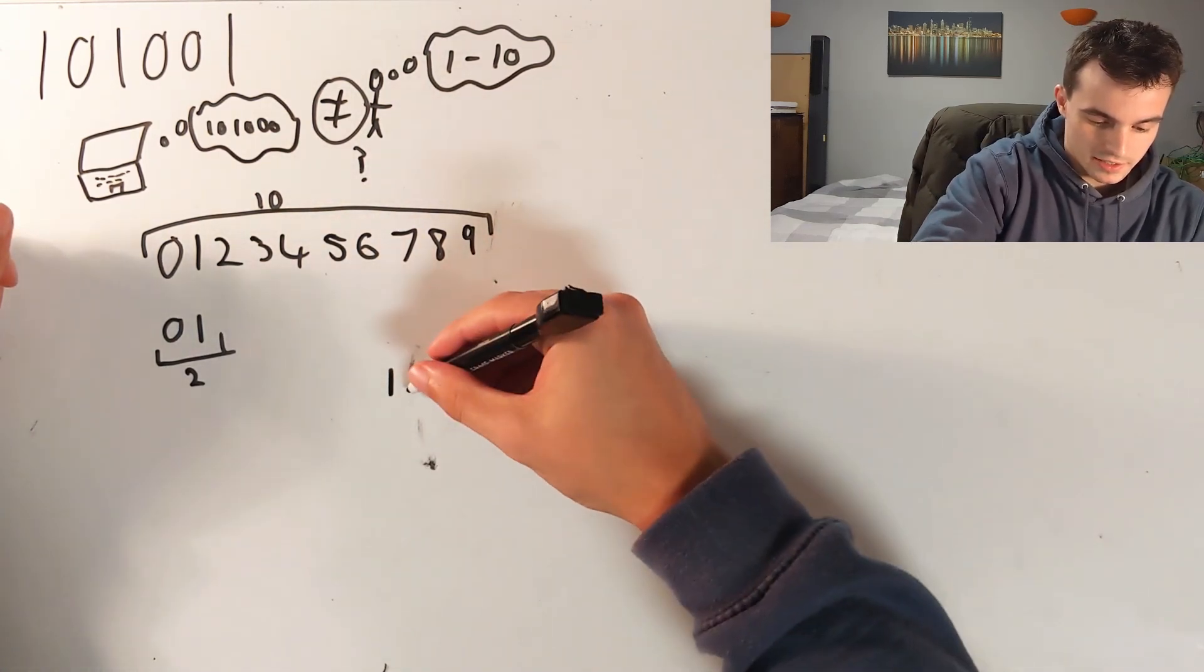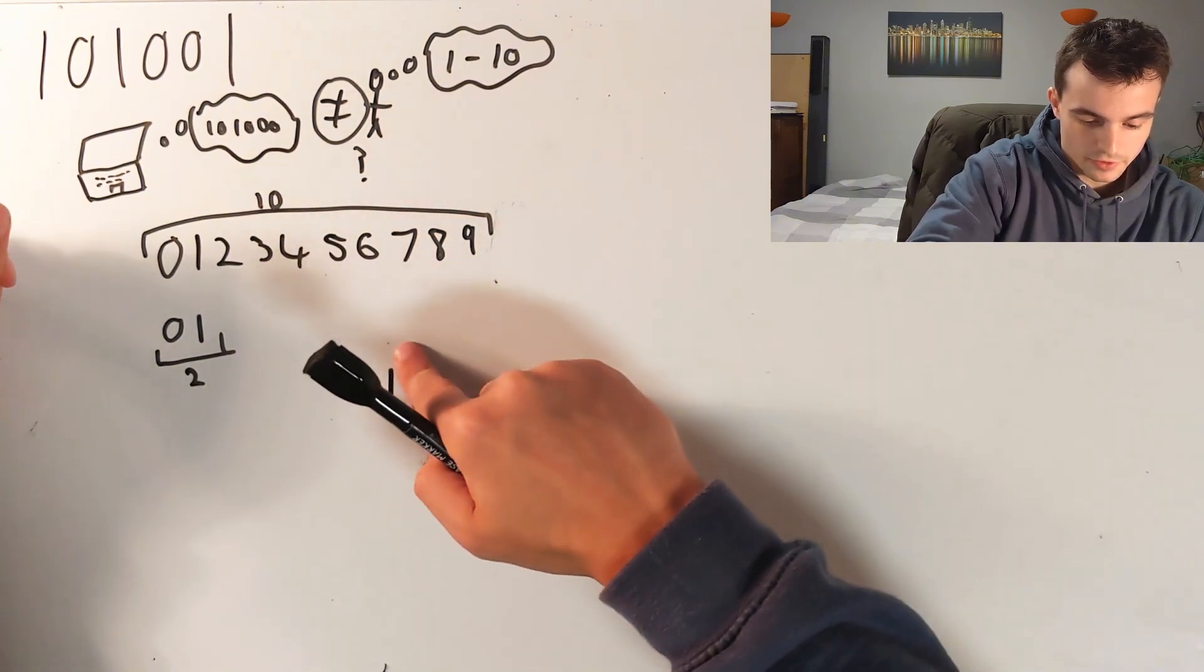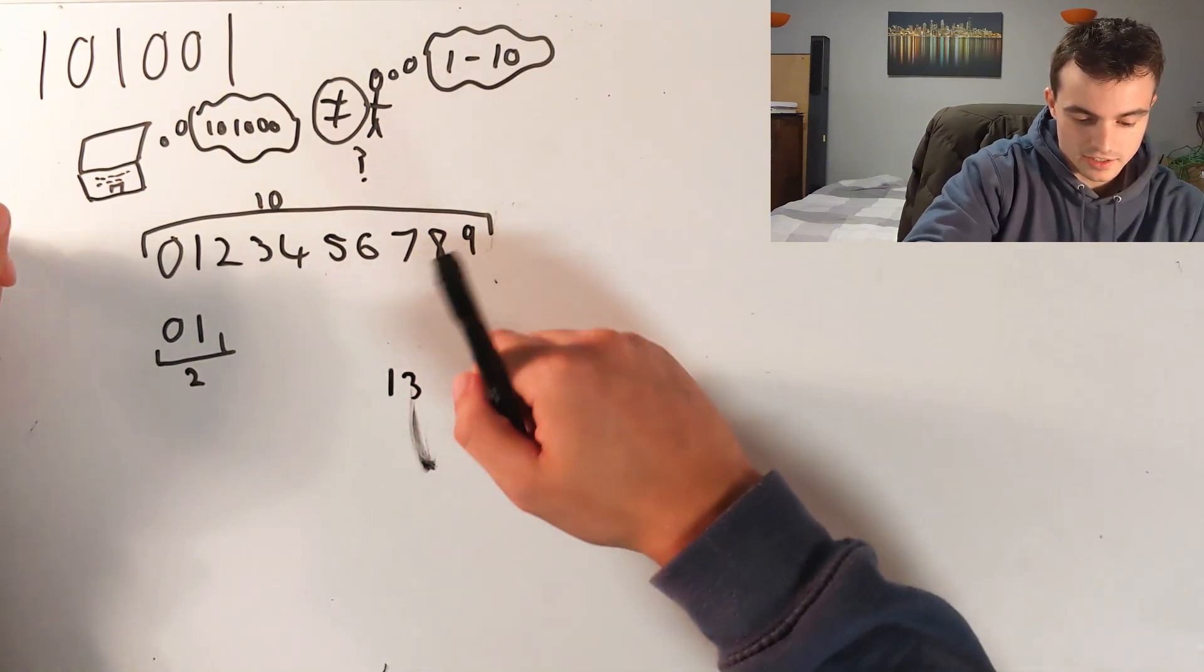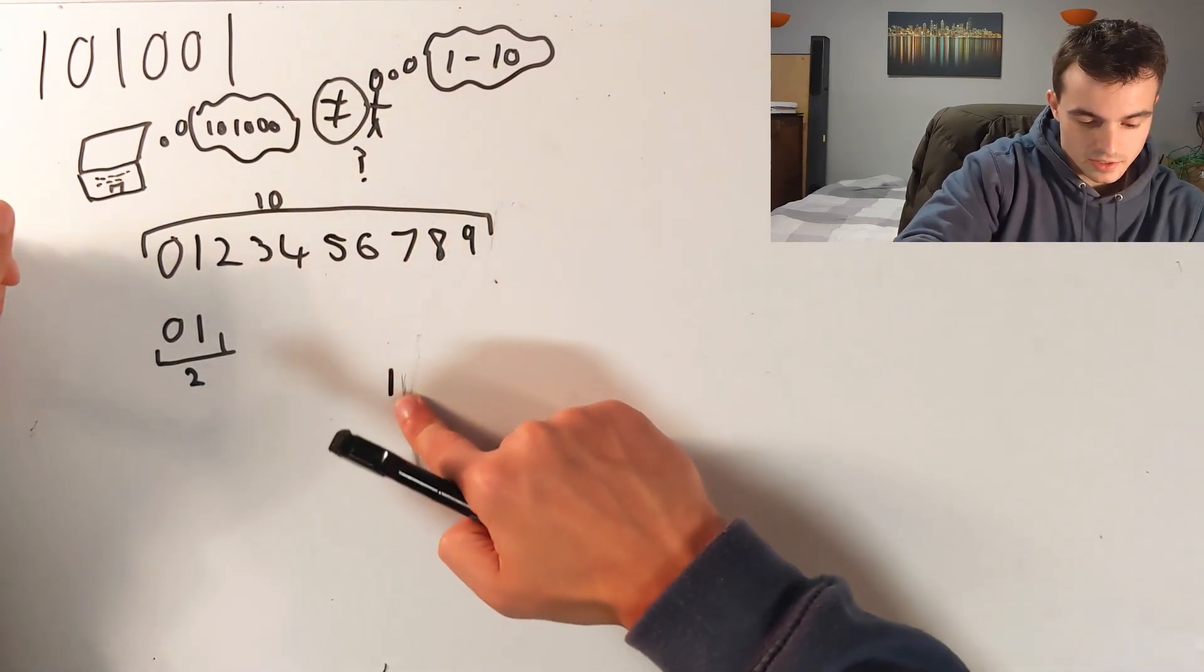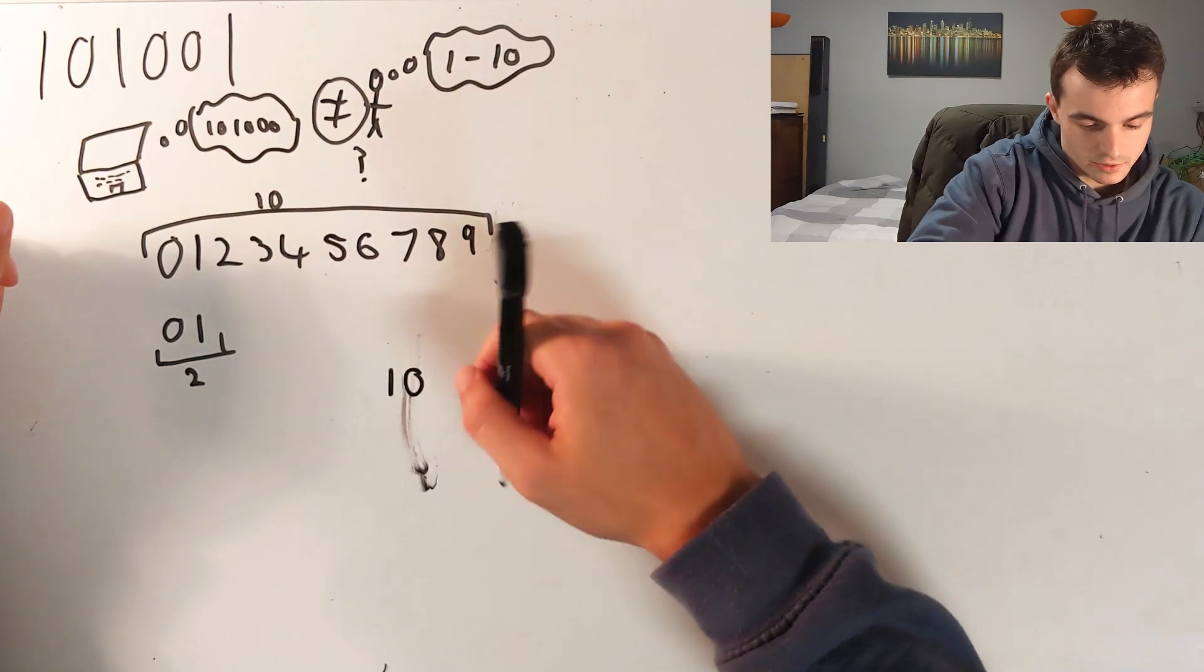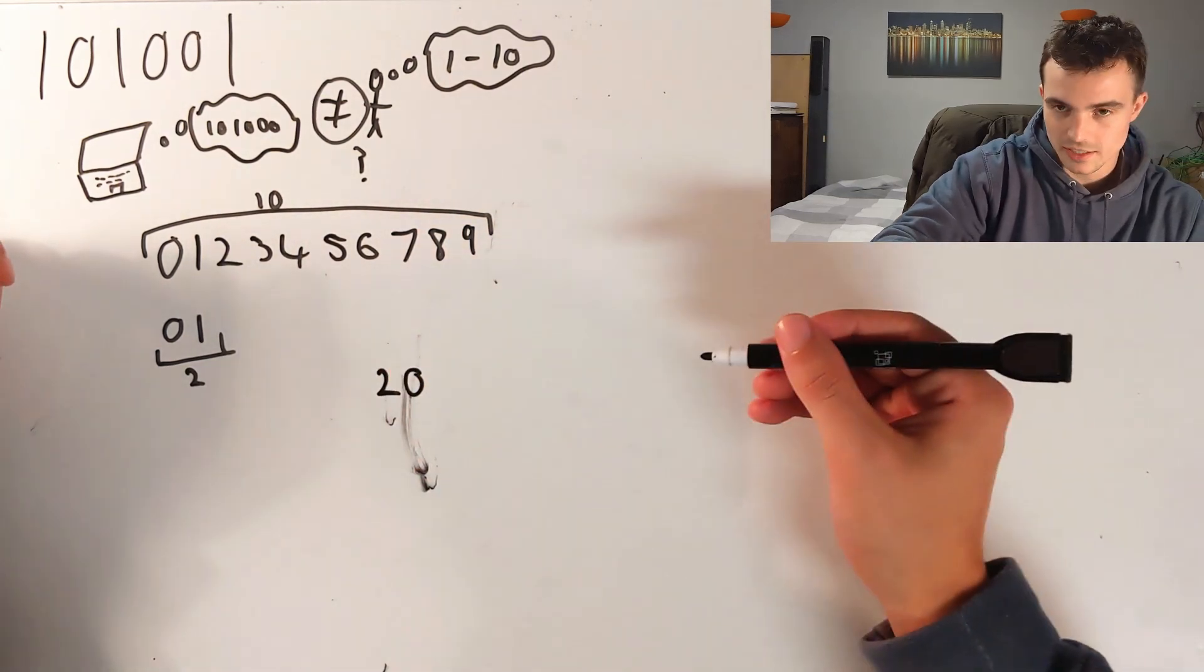So we say eleven, twelve, thirteen. And when we get to nineteen, we do the same. We put a zero and we put a two here.